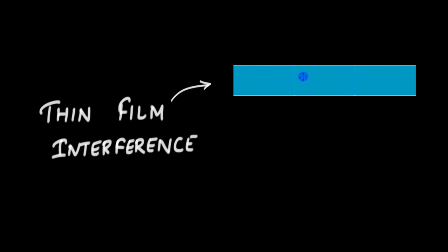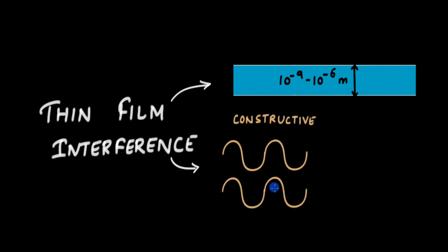Thin film means just a thin layer — a thin layer of material whose thickness can range from nanometers to micrometers. So it is extremely, extremely thin. And interference is when two waves meet or overlap while traveling along the same medium. Sometimes that overlap can lead to constructive interference — that is when the peaks line up with the peaks and the troughs line up with the troughs. We can also say that these two waves are in phase.